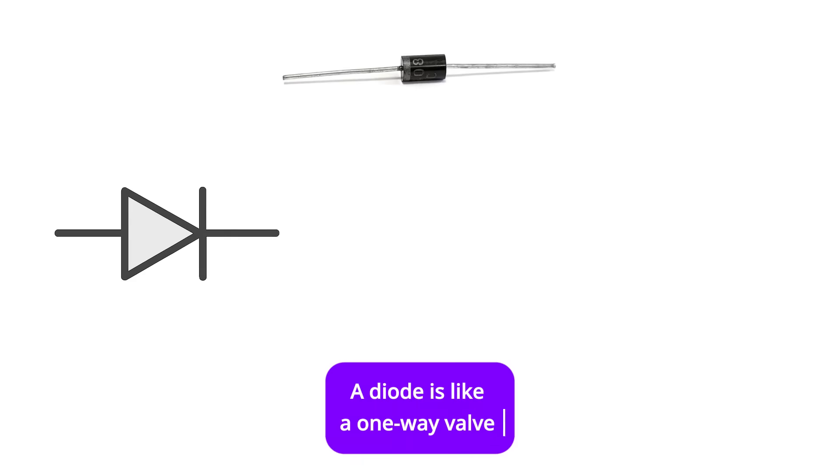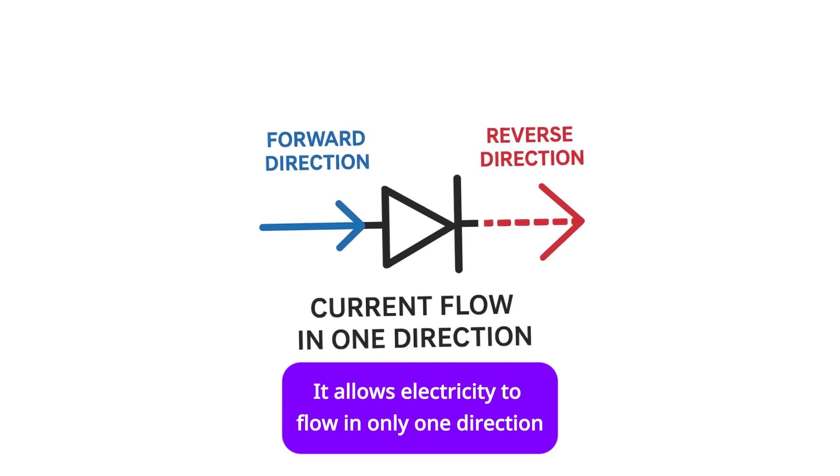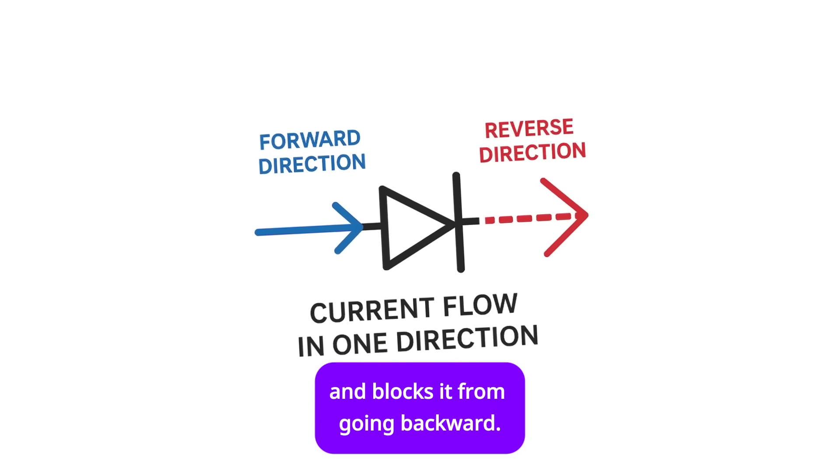Diode. A diode is like a one-way valve or a door that only opens in one direction. It allows electricity to flow in only one direction and blocks it from going backward.